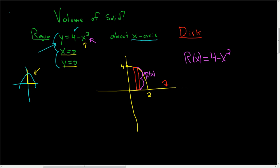And now we're ready to write down the formula for the volume. So the volume is equal to pi, the integral from a to b, of big R of x squared dx. So in this case, it's pi.